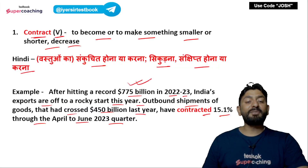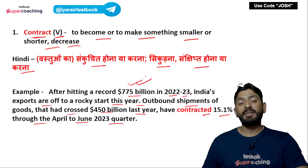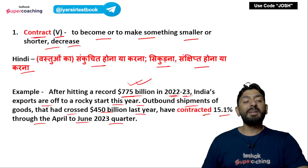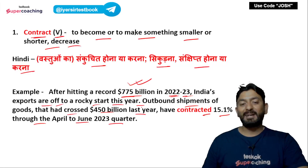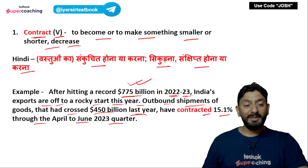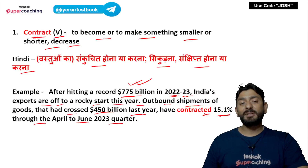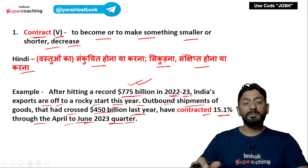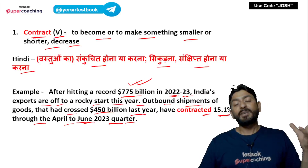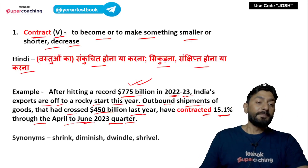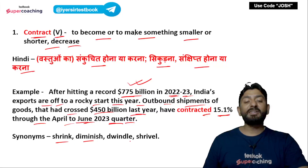Context from The Hindu editorial: पिछले साल India का record export रहा, 775 billion का 2022-23 में. अभी India के exports उतने अच्छे नहीं रहे इस साल — outbound exports 450 billion last year cross कर गया था, पर अब almost 15% कम होके 400 billion से नीचे हो गया है. Synonyms of 'contract' (verb): shrink, diminish, dwindle, shrivel — इन सभी का मतलब है कम हो जाना.